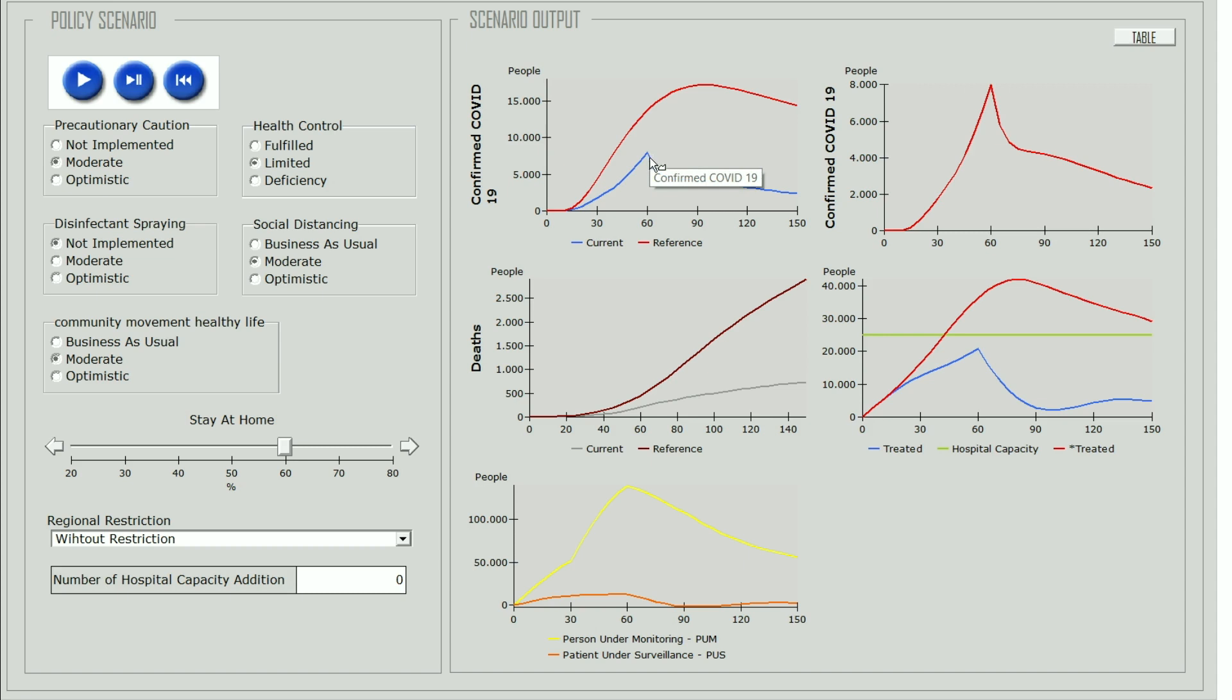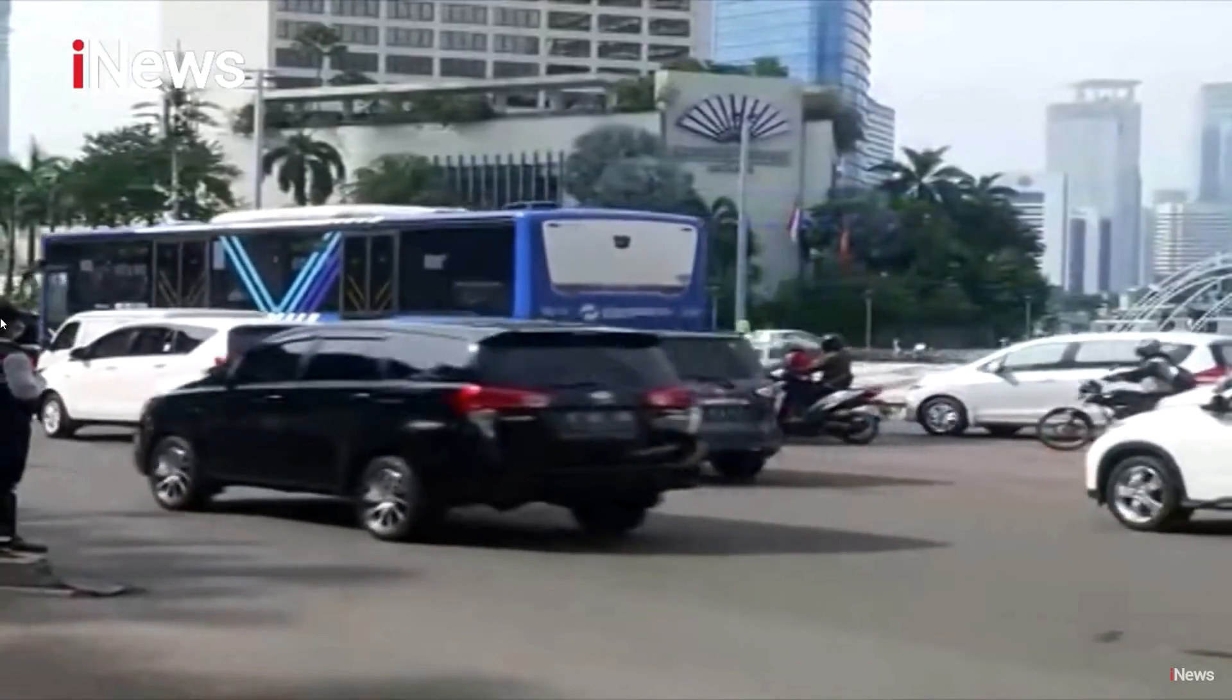But there is still a slight increase and the maximum point is on day 70. Because there are still possibly positive cases, and there are still PUM and PUT around the community. On the other hand, the activities have started to run again.